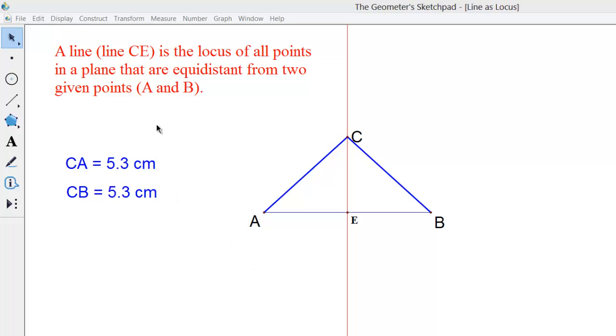Up here in red you can see the definition, a line, and we're using line CE which is the red line right here.